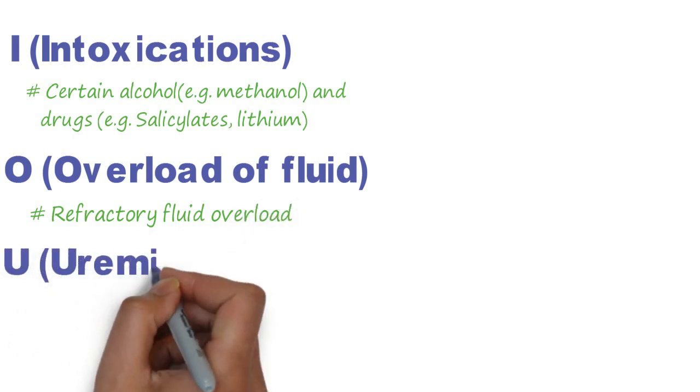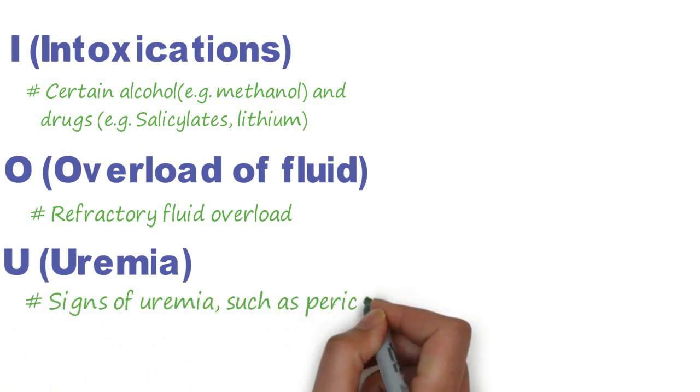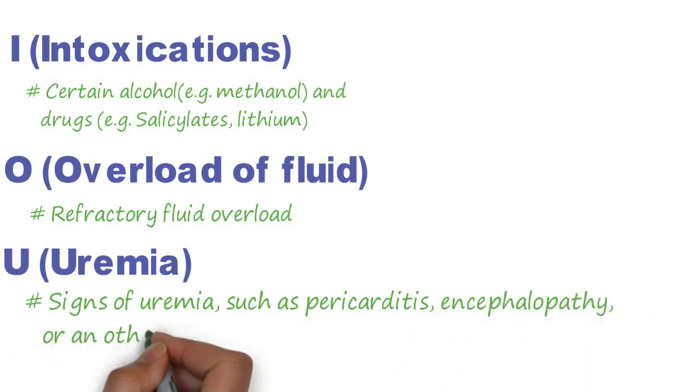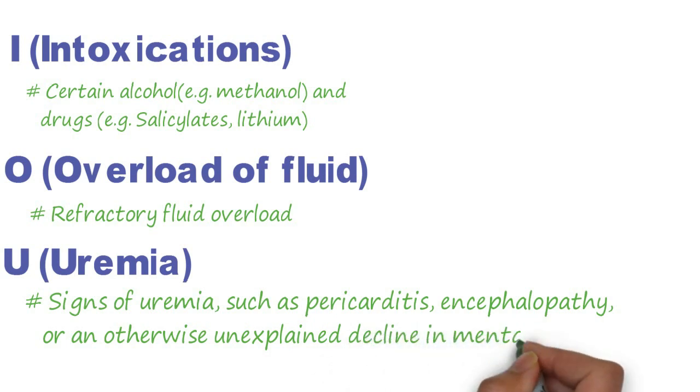And the last indication is U for Uremia, which includes signs of uremia such as pericarditis, encephalopathy, or an otherwise unexplained decline in mental status.